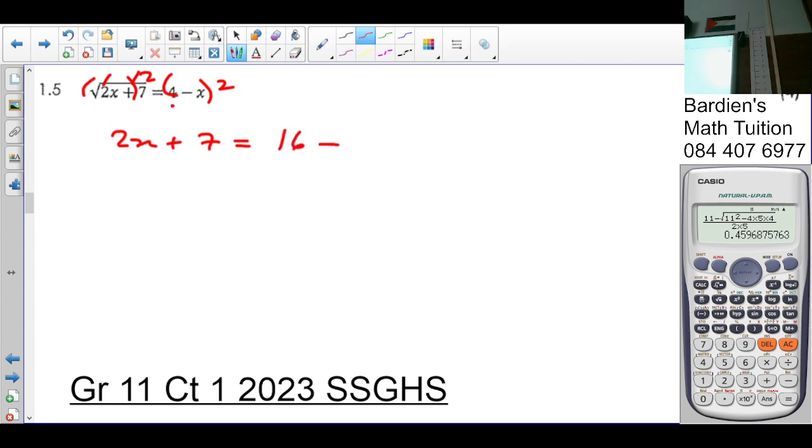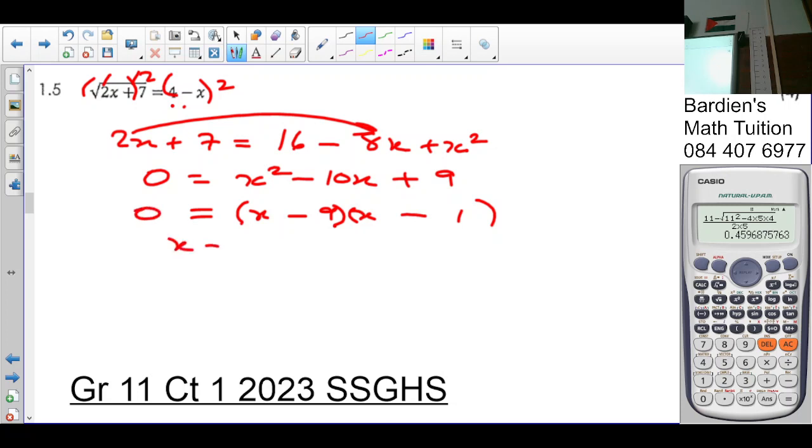So we've got 16 minus 8x plus x squared. You get it again in standard form of ax squared plus bx plus c. So it's going to be x squared minus 10x. 16 minus 7 is 9. Is that correct? So that gives us x and x, 9 and 1. Both is negative. So x equals 9 or x equals 1.